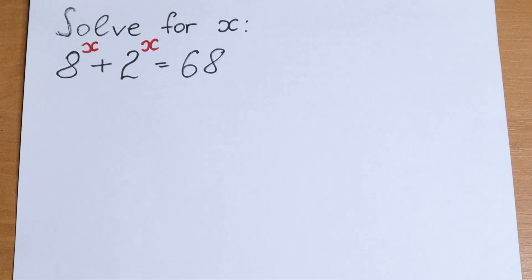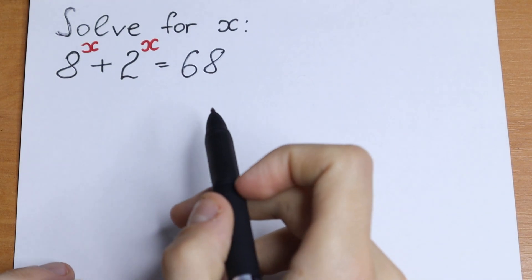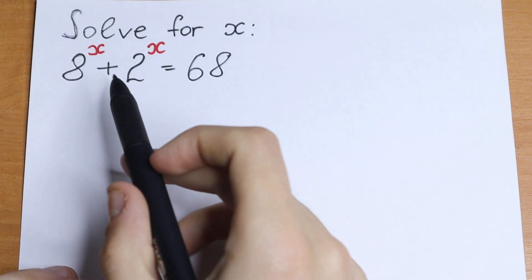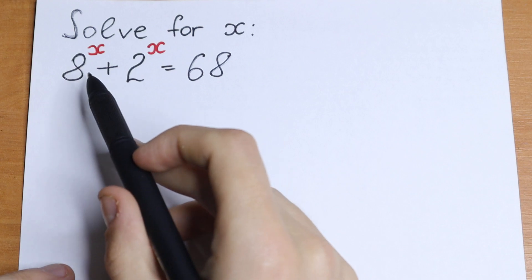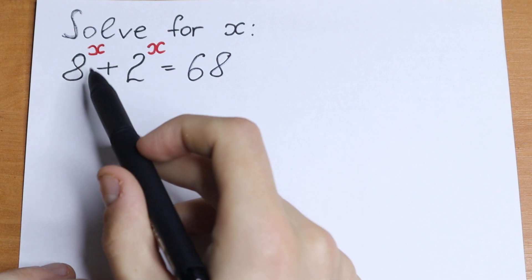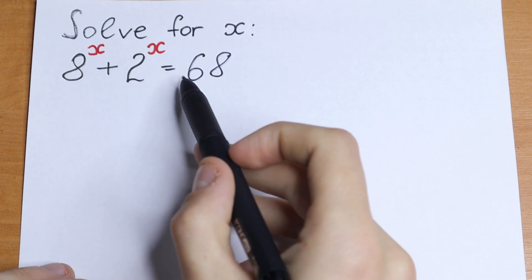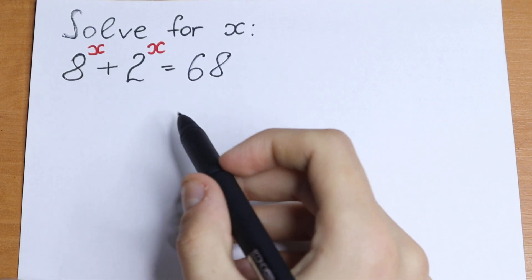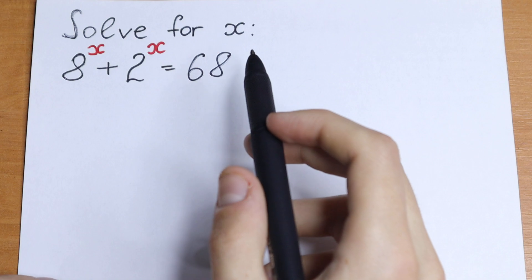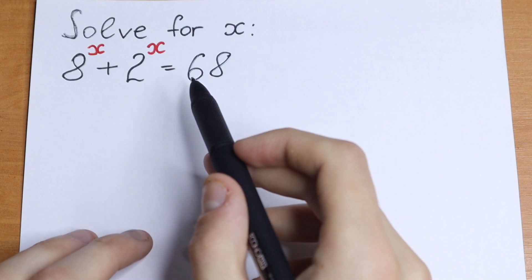Hello everyone, welcome back to MathMood. Today we have an interesting equation — an exponential equation: 8 to the power x plus 2 to the power x equal to 68. How can you solve this equation? Take a look.